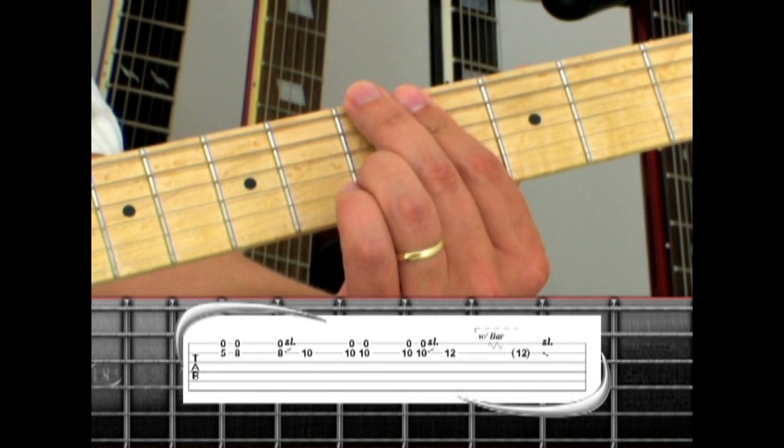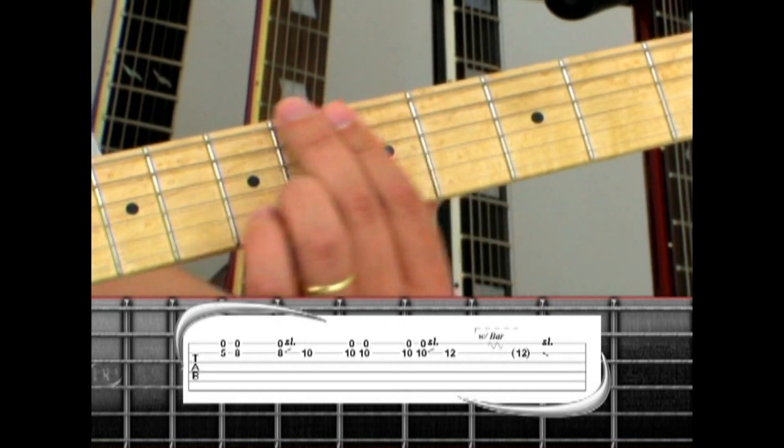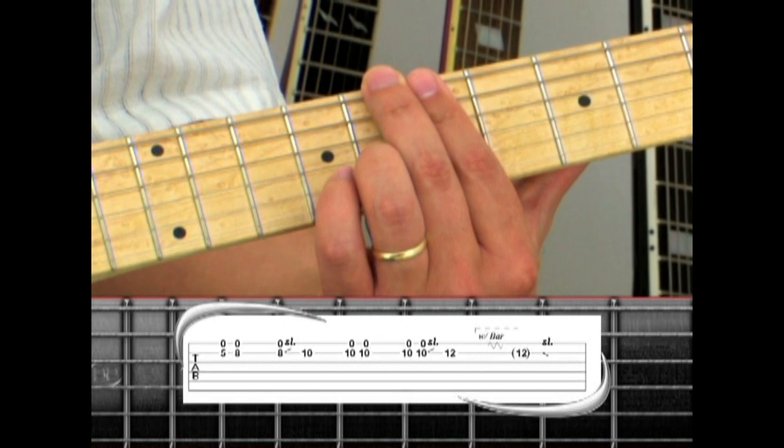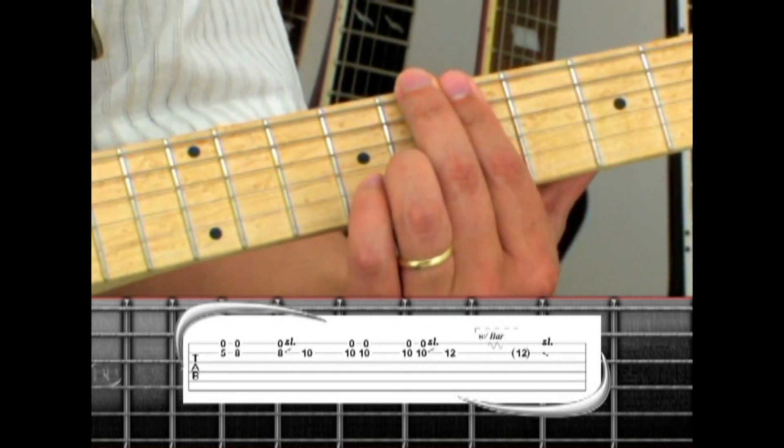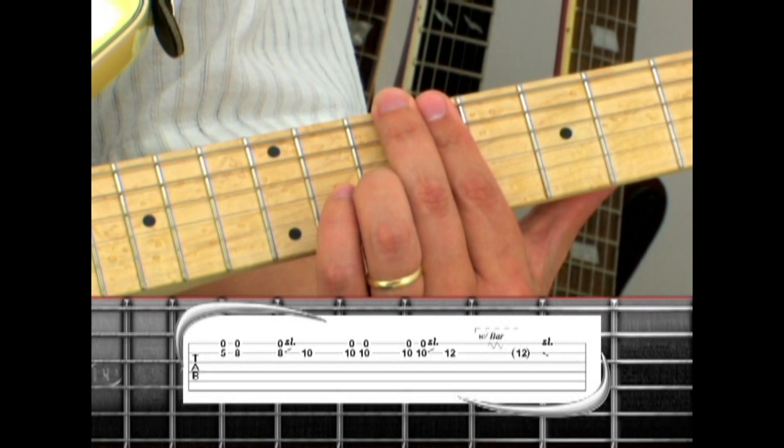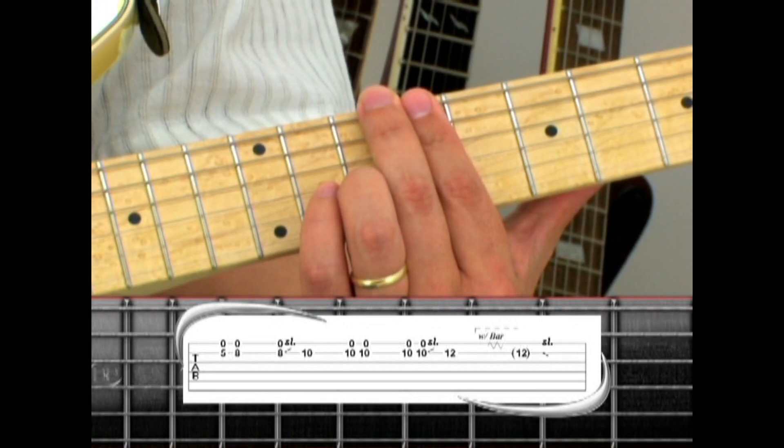Fifth fret, then play the same thing on the eighth fret, second string eighth with the first string open, eighth fret again and slide up to ten. Double pick ten, double pick ten again and slide to twelve.